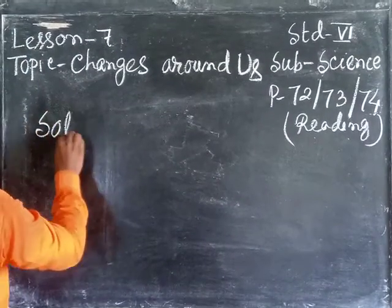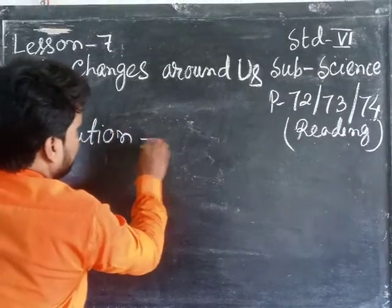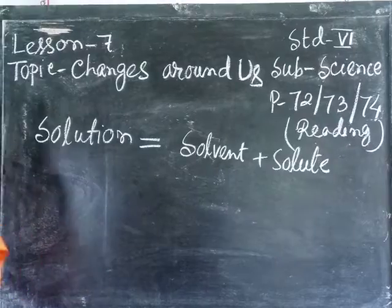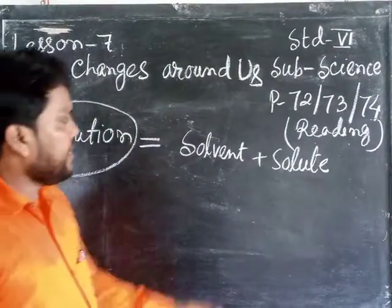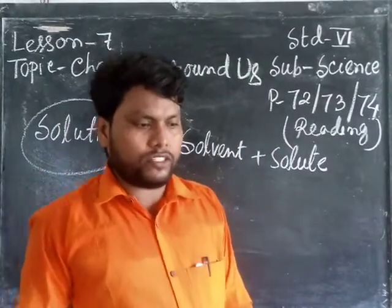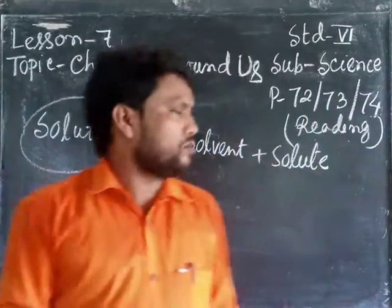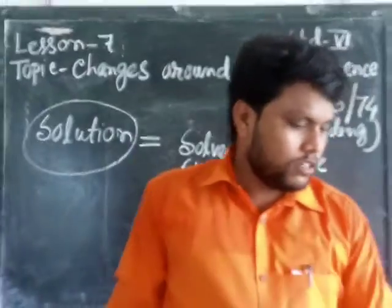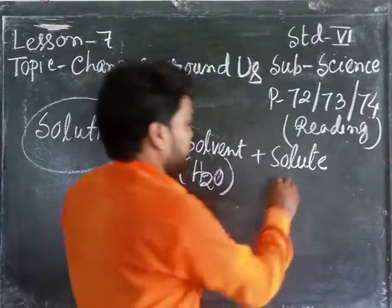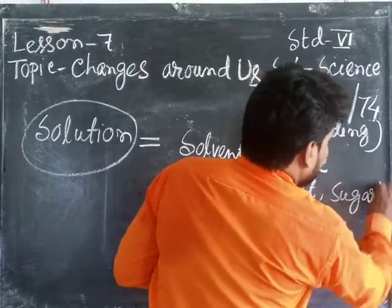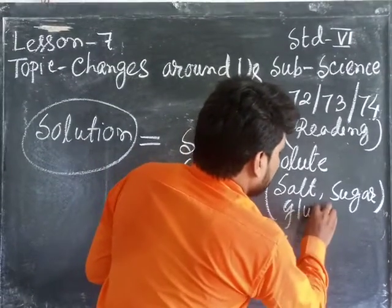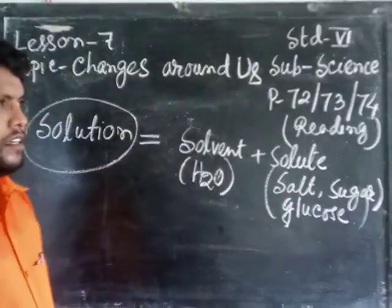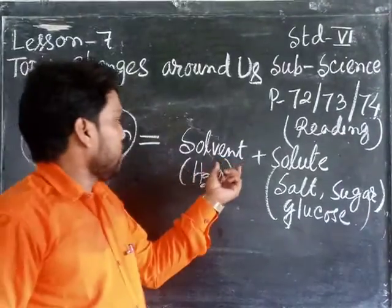What is called solution? Solution means solvent plus solute. Solution means a mixture of any solvent with the solute. Solvent means water, that means H2O. Solute refers to various kinds of substances — salt, sugar, and so many examples of solute. That means the substances that are mixed with the solvent can make a solution.